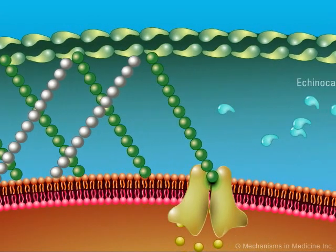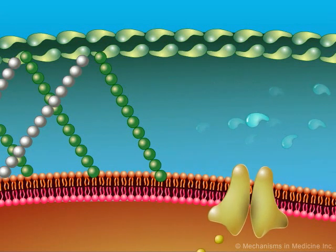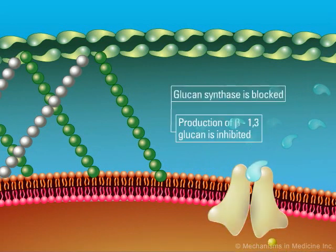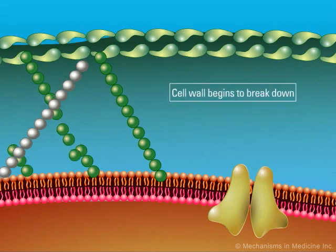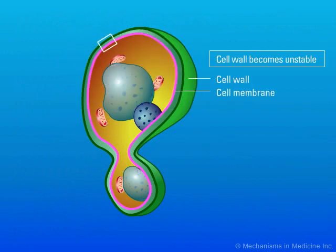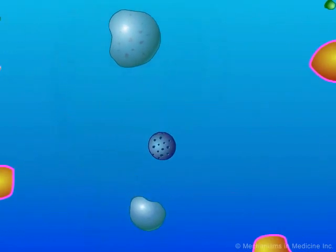Echinocandins act by inhibiting the synthesis of 1,3-beta-D glucan. Echinocandins may also block beta-1,6 glucan synthesis. This is achieved by binding to the beta-1,3 synthase complex, an enzyme that is not present in human cells. This eventually leads to reduced fungal cell wall integrity, abnormal cell morphology, and finally, cell rupture and death.